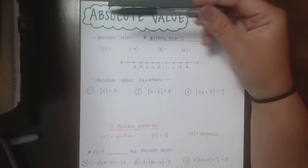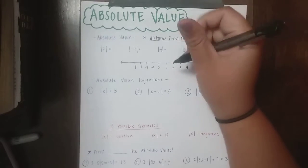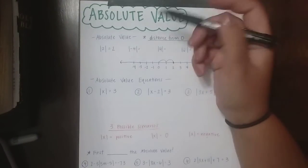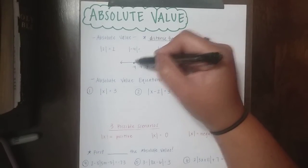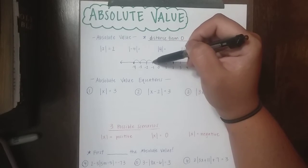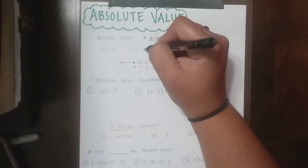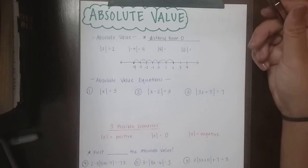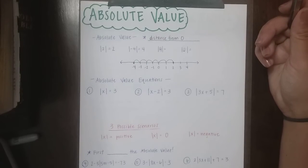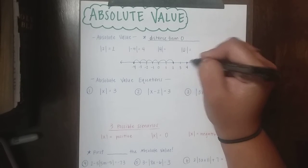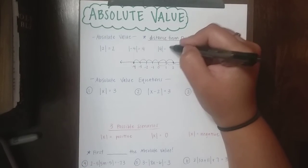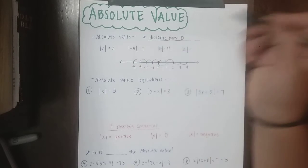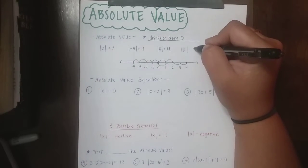My distance from zero when I'm at 2 — if I'm here at 2, my distance from zero is 2, so the absolute value of 2 is 2. If I go to negative 4, my distance from negative 4 to zero is 1, 2, 3, 4. So the absolute value of negative 4 is positive 4. Absolute value is never going to be a negative number, because we never think about distance as a negative value. The absolute value of positive 4 is also 4. And 0 is on 0, so my distance from 0 is just 0.